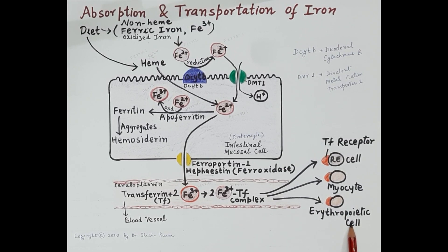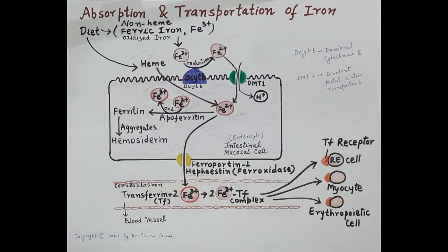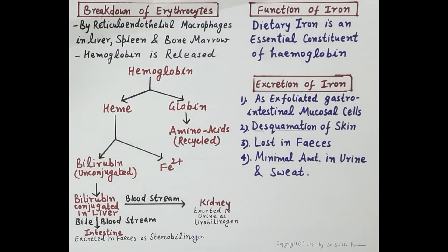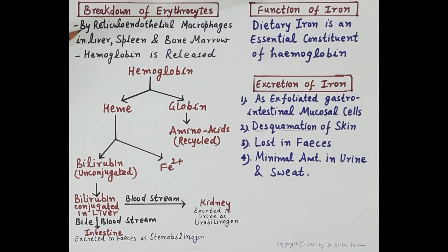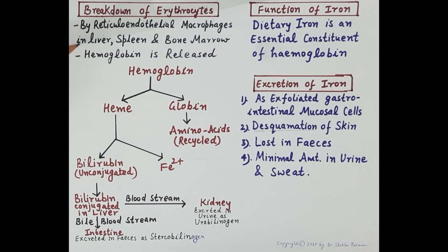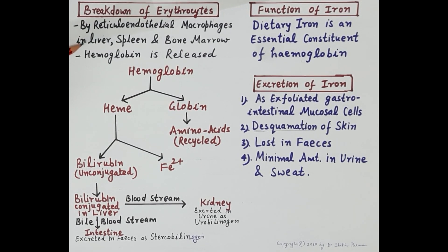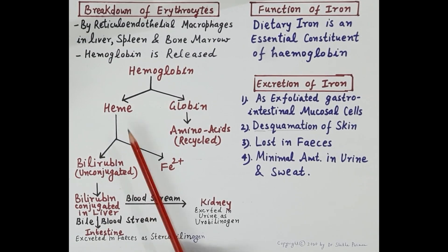The lifespan of erythrocytes is 120 days, and thus RBCs are continuously replaced. Worn-out or damaged erythrocytes are broken down by reticuloendothelial macrophages in the liver, spleen, and bone marrow. Once these erythrocytes are broken down, hemoglobin is released, which is further broken down into heme and globin.